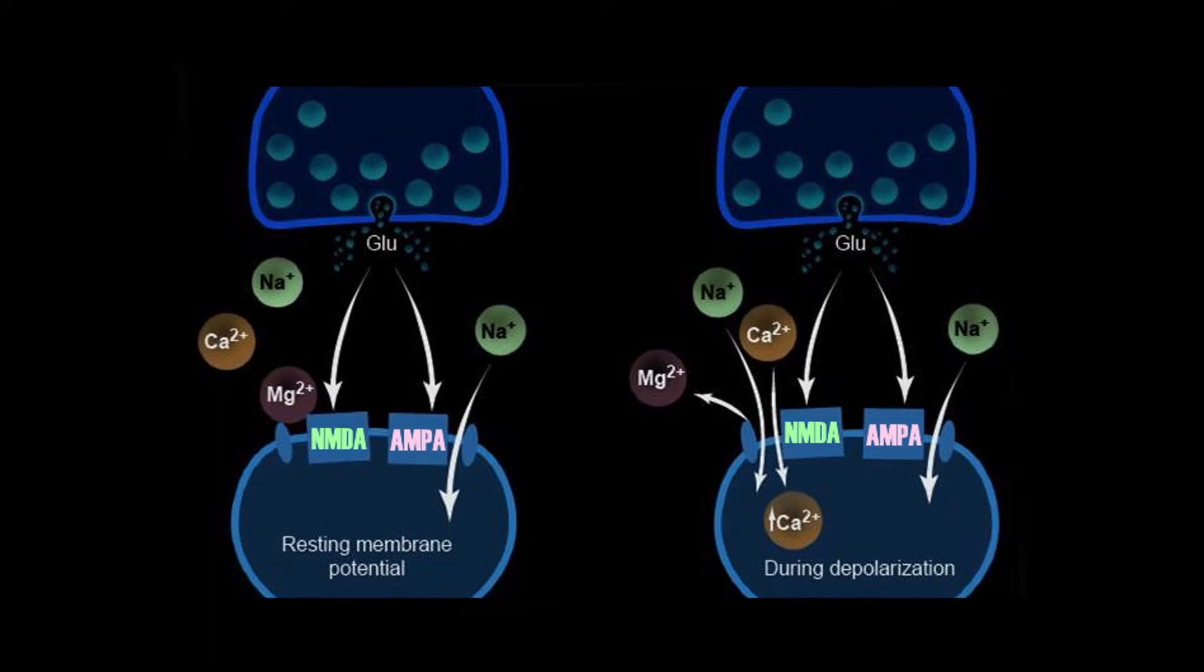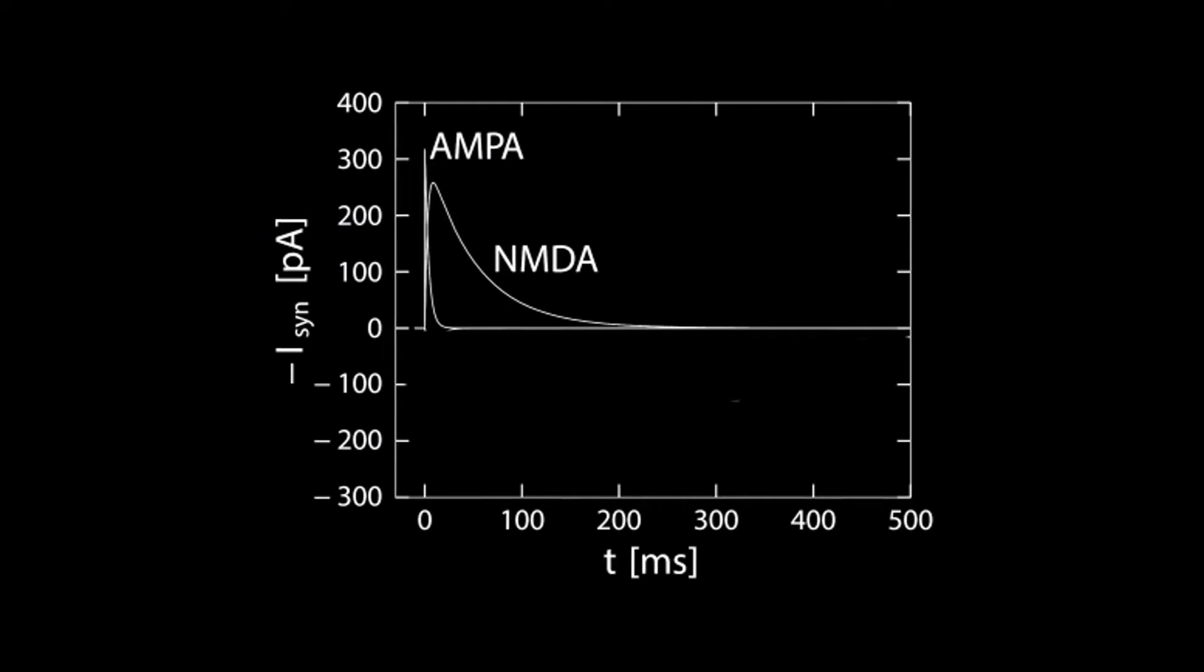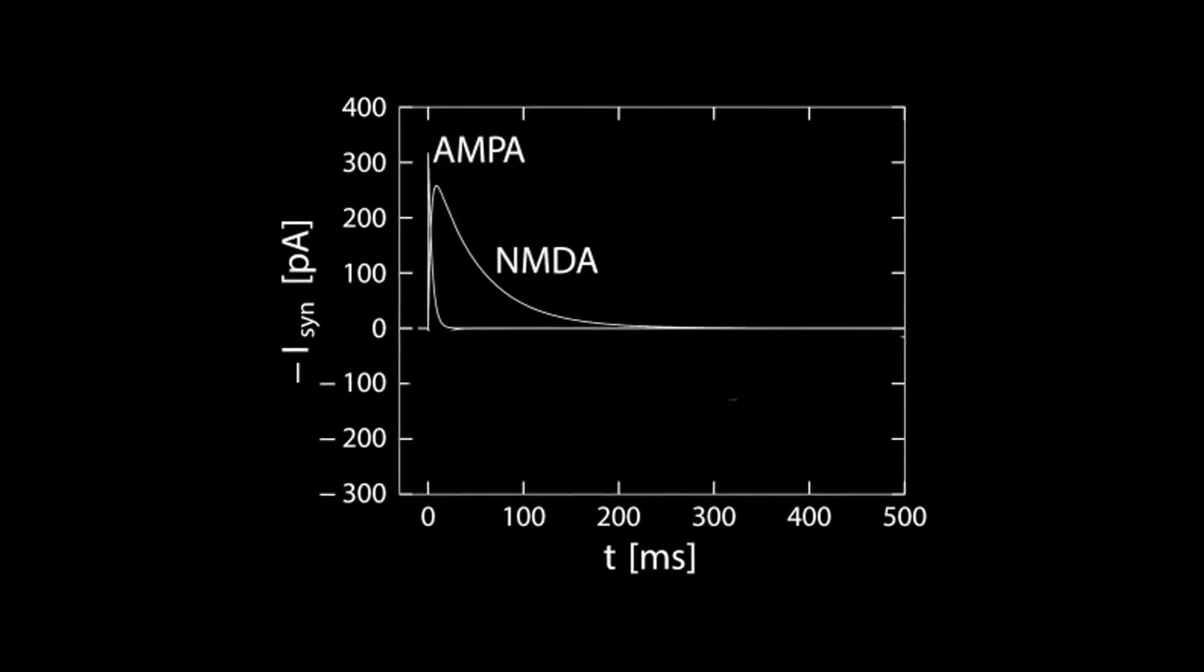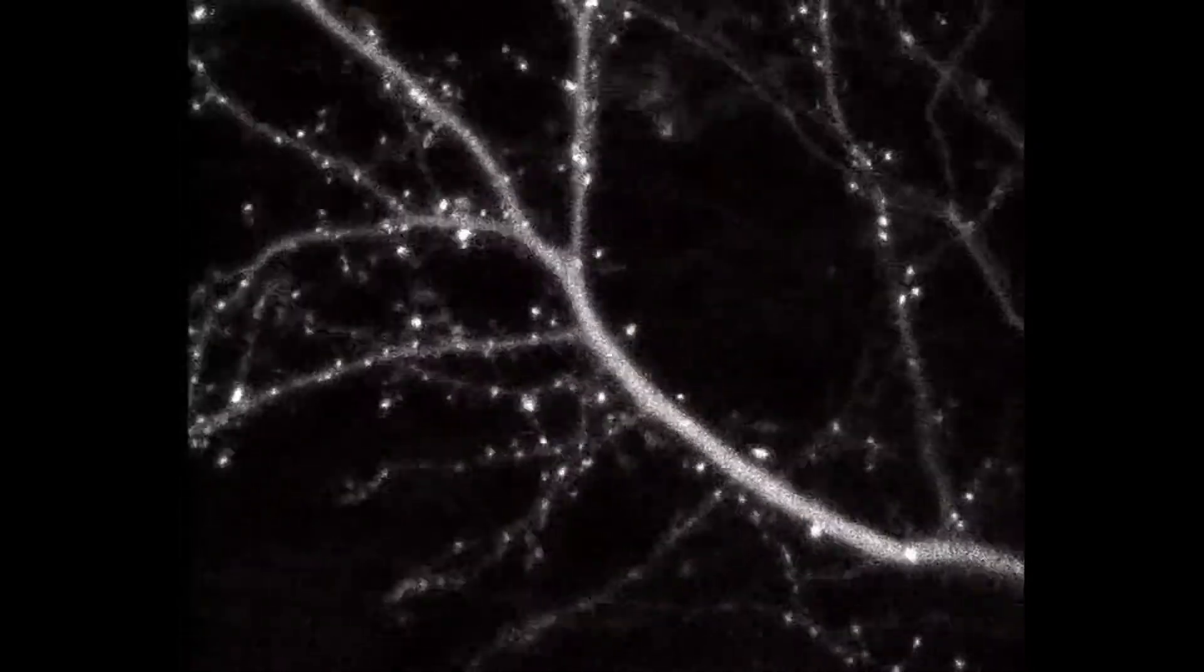Without going into the details, the AMPA activation is important for fast signal transmission. On the contrary, NMDA receptor activation is slower and is also important for the modulation of synaptic strength, which means that it plays a crucial role in neuroplasticity.